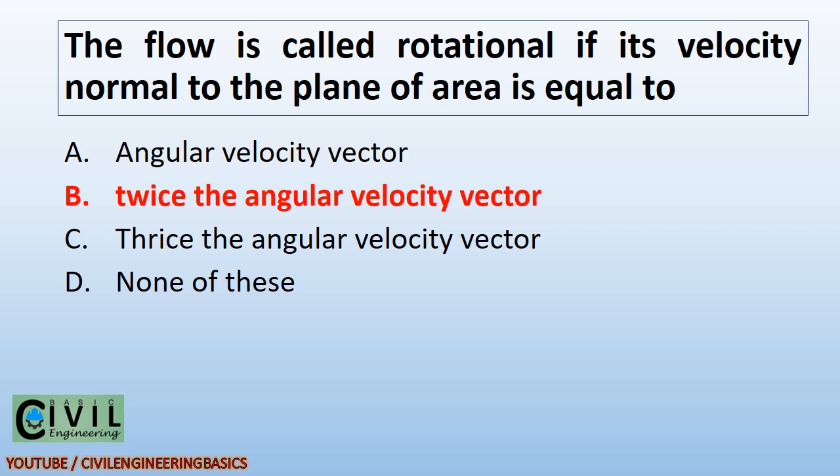The flow is called rotational if its velocity normal to the plane of area is equal to twice the angular velocity vector.